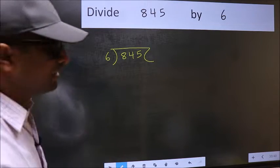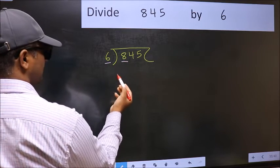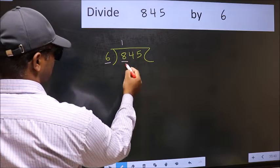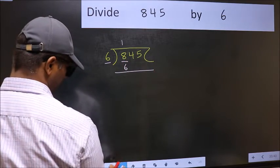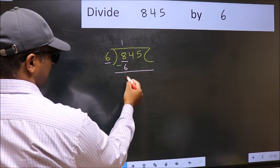Next. Here we have 8 and here 6. A number close to 8 in 6 table is 6 once 6. Now you should subtract. 8 minus 6, 2.